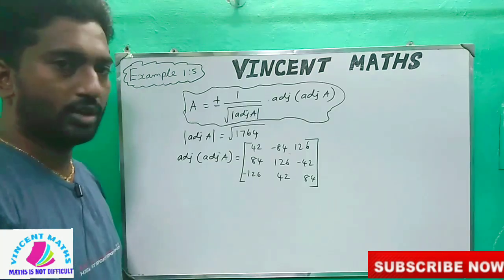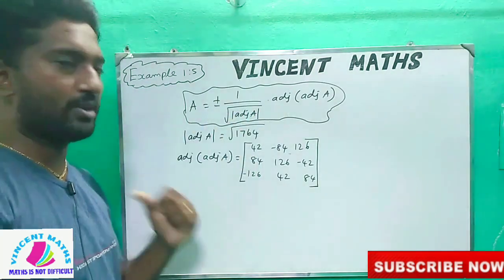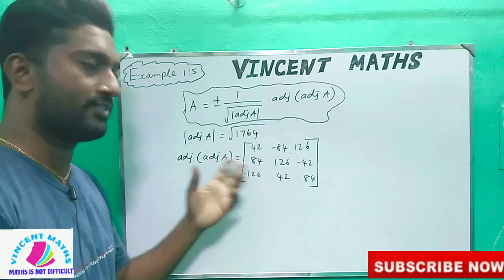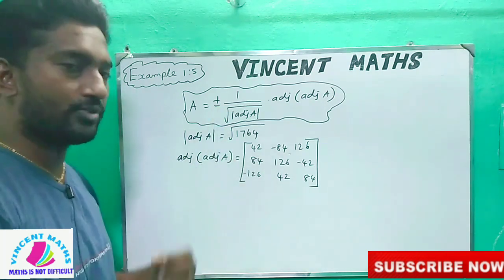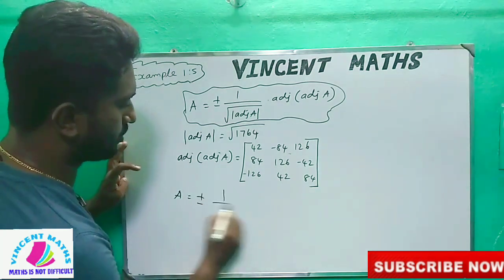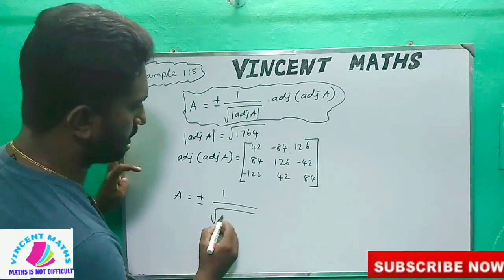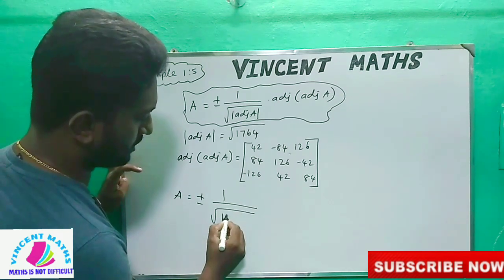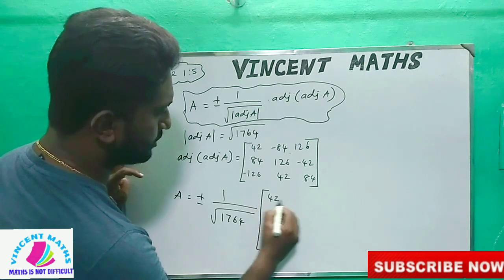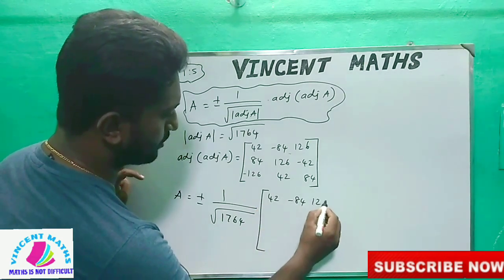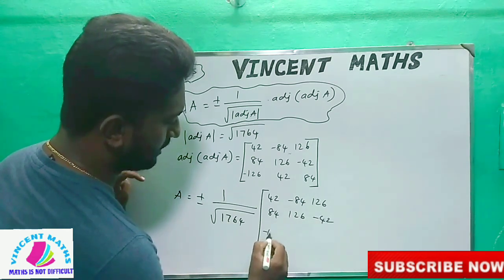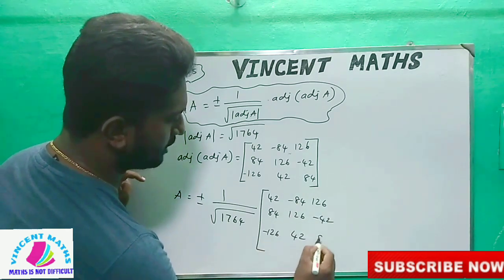The entries are: 42, 84, 126, minus 126, minus 84, 126, 42; next: 128, minus 42, 84. This is the Adj of Adj of A. We will now show the determinant of Adj of A. We will substitute the formula. The determinant of Adj of Adj of A gives A equal to plus or minus 1 by square root of 1764.